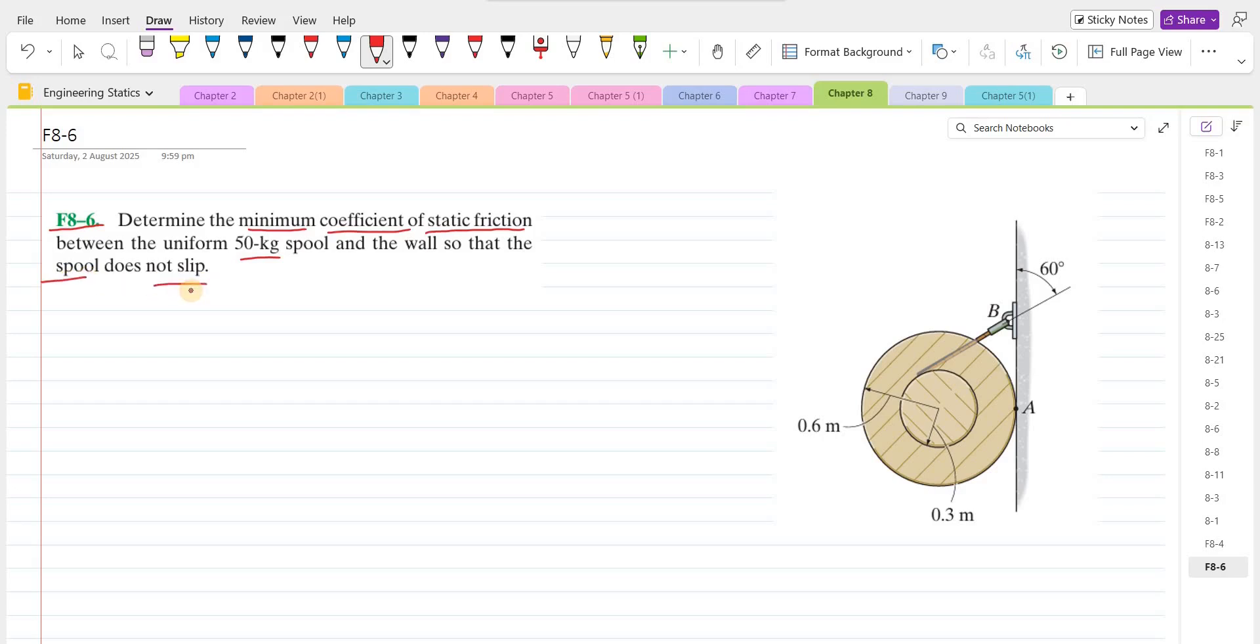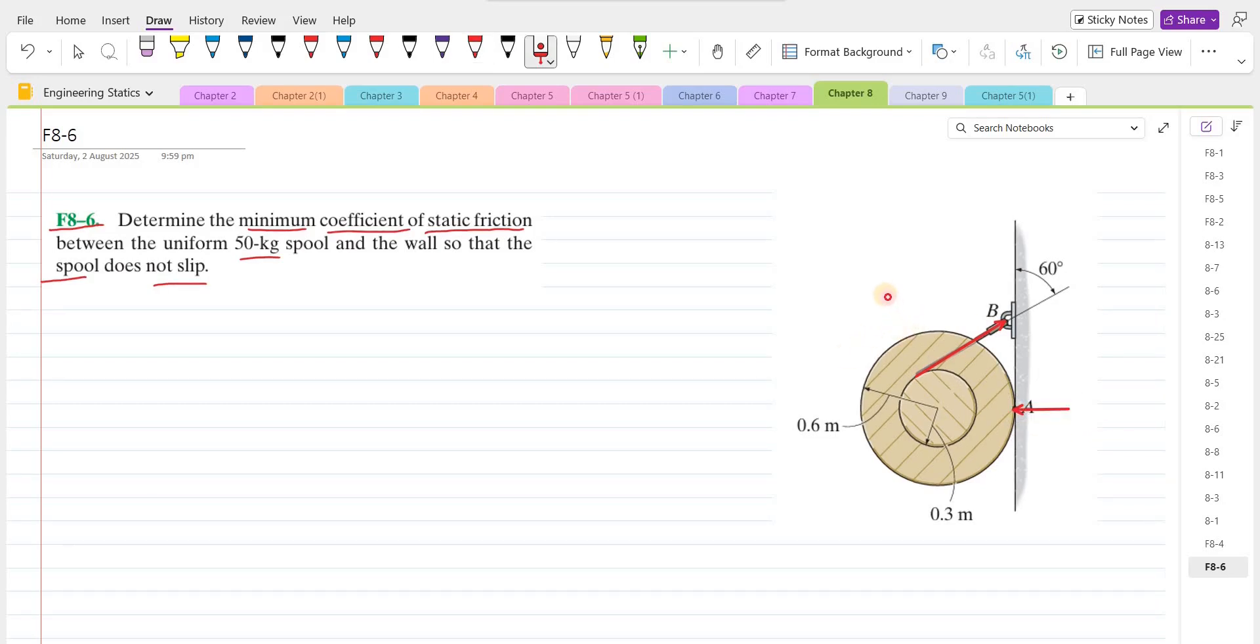To solve this problem, first we have to draw the free body diagram of this spool. The spool is supported by this cable, so we have a tensile force. We have a contact force at point A and a frictional force. As the spool would move downwards if not supported by this cable, the frictional force would oppose this downward movement, so the frictional force acts in the upward direction. We also have a weight force acting in the downward direction.